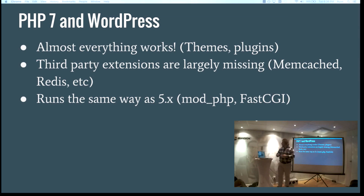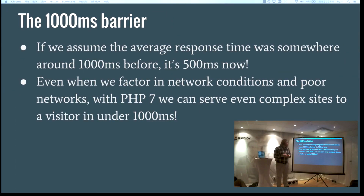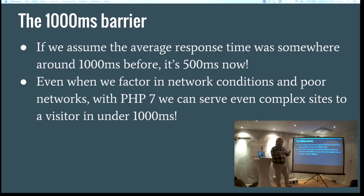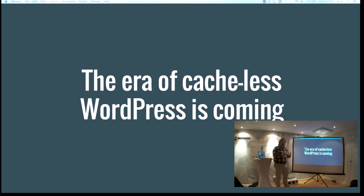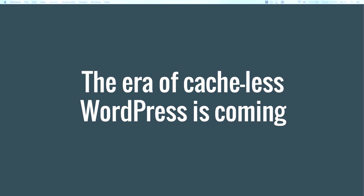If we remember that graph showing the average response time for WordPress was 1.1 seconds, well, if everyone was running PHP 7, it would be 500 milliseconds. And 500 milliseconds was approximately our budget for returning a site that feels instant. This is a big thing because that means the era of cache-less WordPress is coming. For a vast majority of sites, you won't even need a static cache — that hassle won't really be a problem anymore. PHP 7 is so fast that you can get that instant experience anyway. And if you put a little work into optimizing your site further, you can do dynamic sites that couldn't rely on static page caching and actually serve them in a way that feels fast.